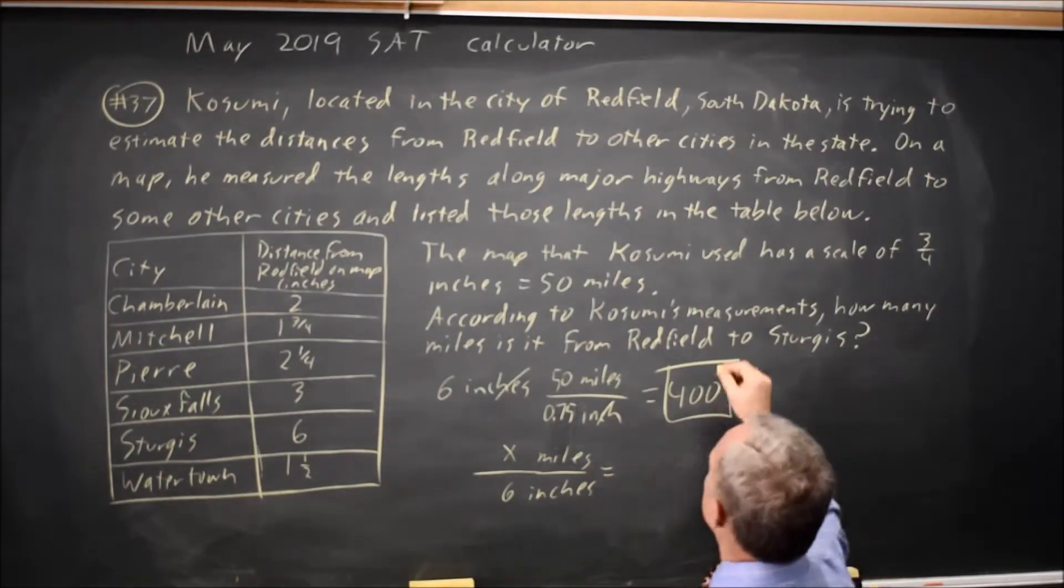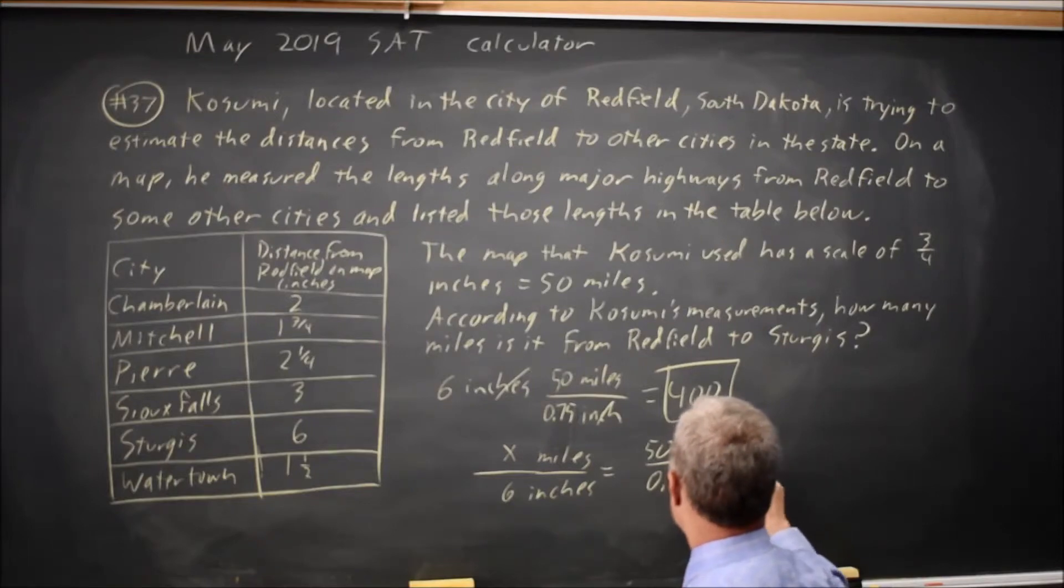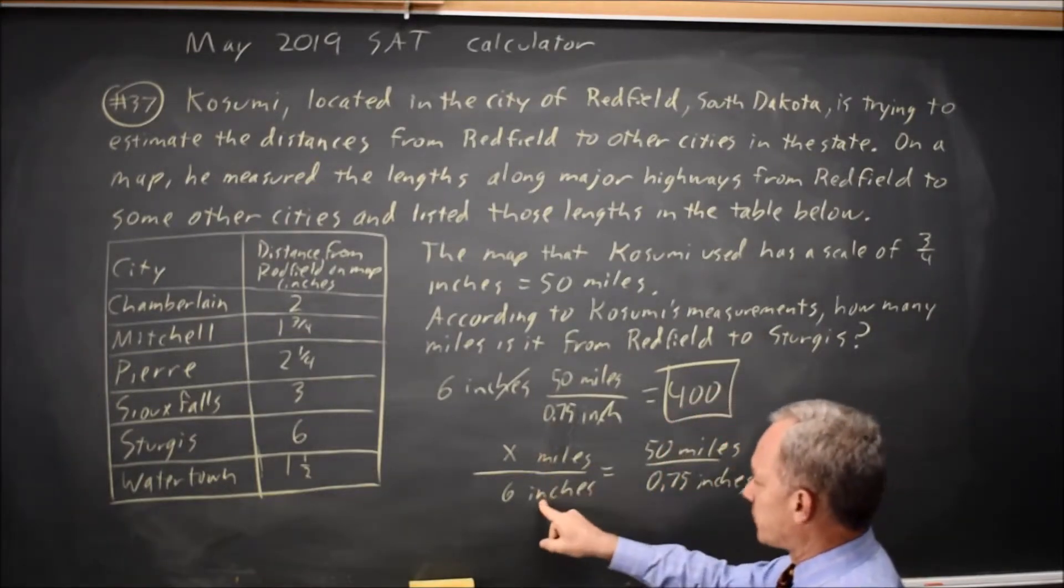Which is miles on top: 50 miles over 0.75 inches. And I know I've set this proportion up correctly because this is miles over inches on the left, miles over inches on the right.